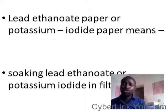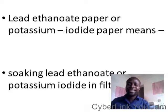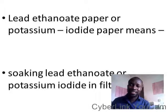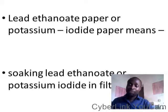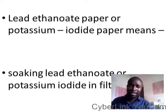Lead ethanoate paper could also be called potassium iodide paper. This simply means soaking lead ethanoate into a container that contains a filter paper — soaking lead ethanoate or potassium iodide in filter paper. Get a filter paper, get a solution of lead ethanoate, dissolve it, and put the filter paper inside. That becomes lead ethanoate paper or potassium iodide paper.